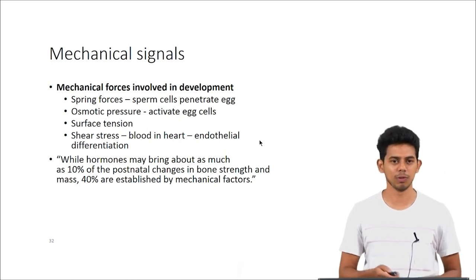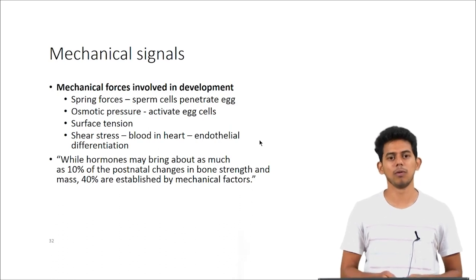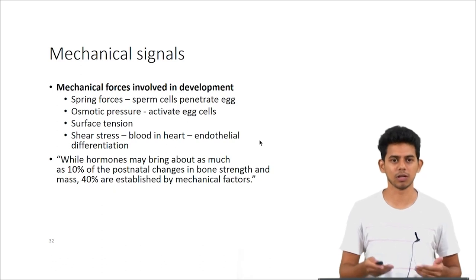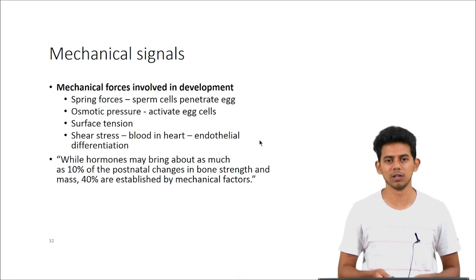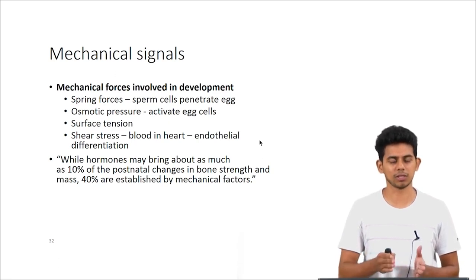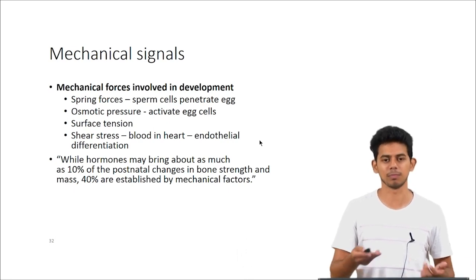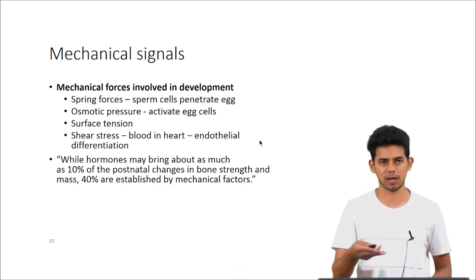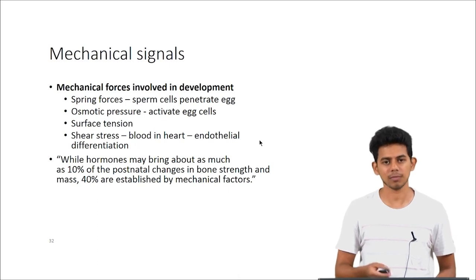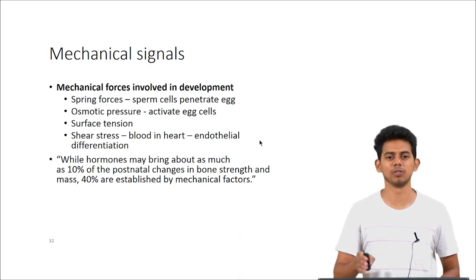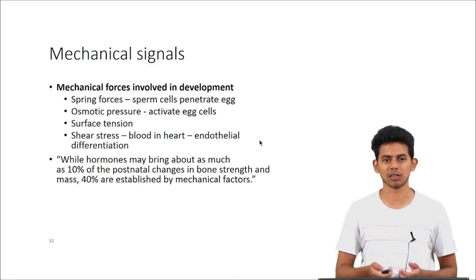After looking at chemical signals, we move on to mechanical signals used for tissue engineering. Mechanical signals are normally used by cells to grow and proliferate, and the normal development of most tissues requires some sort of mechanical forces. Examples include spring forces — similar to a spring being compressed and relaxing — which drives sperm cells to penetrate eggs; osmotic pressure, which activates egg cells; and shear stress found in the heart, where blood pumped by the heart experiences shear stress that affects endothelial cell differentiation. Interestingly, only about 10% of postnatal changes in bone strength are influenced by hormones, whereas around 40% are influenced by mechanical factors.